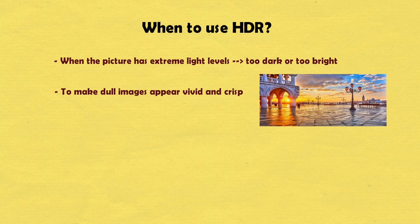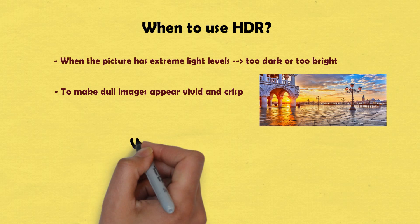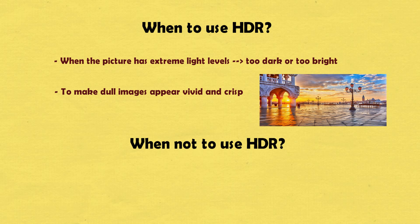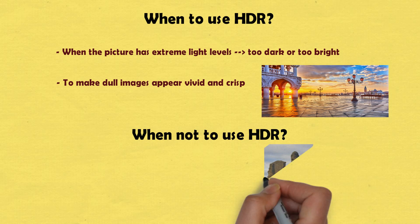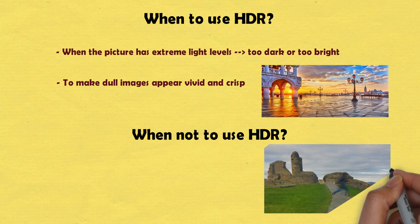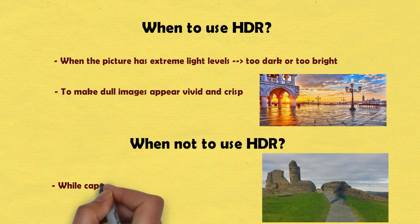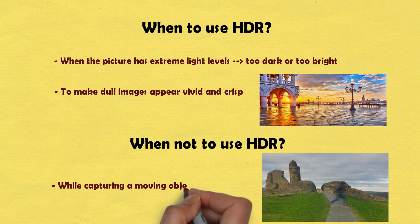Just for a side note: sometimes when there are too many colors or lights present in the frame, with HDR the images may appear a bit unnatural. Now, when not to use HDR — you should not use HDR while capturing a moving object or motion, because as stated earlier, with HDR on, your camera takes multiple images and then combines them. So if you are capturing a moving subject, you will get a blurred photo when the HDR software finally combines the photos taken.